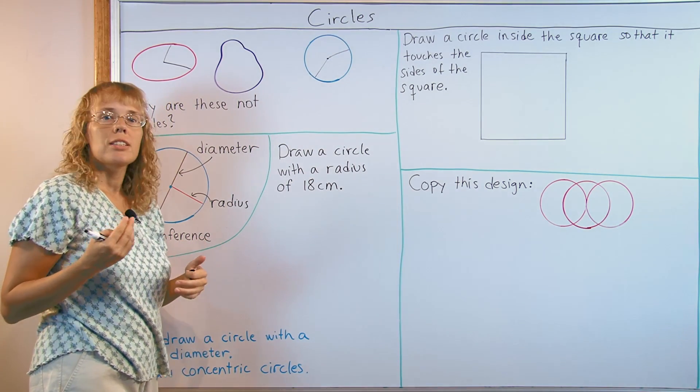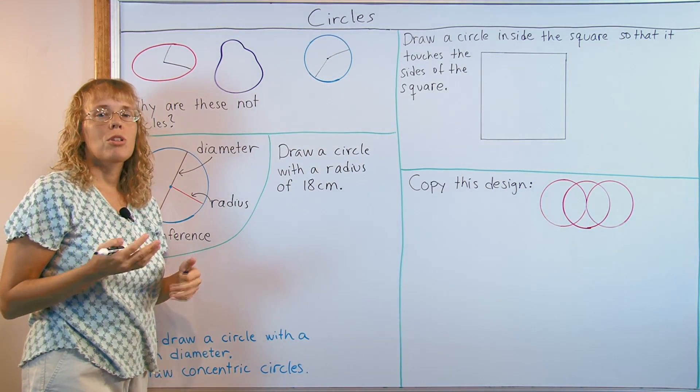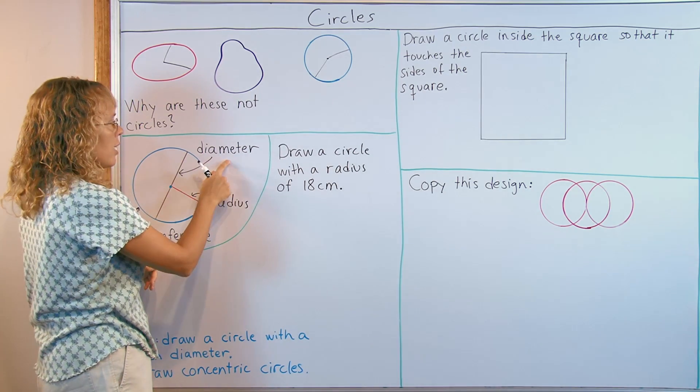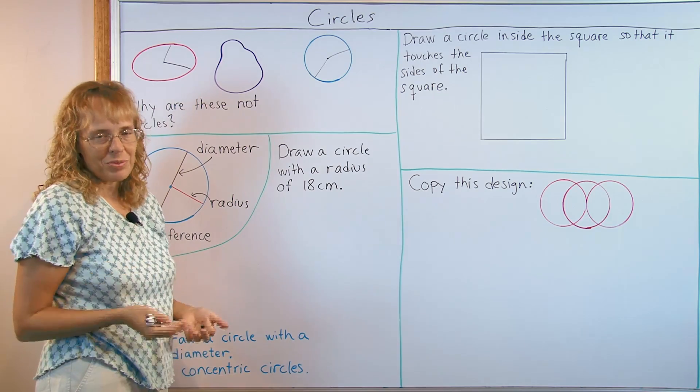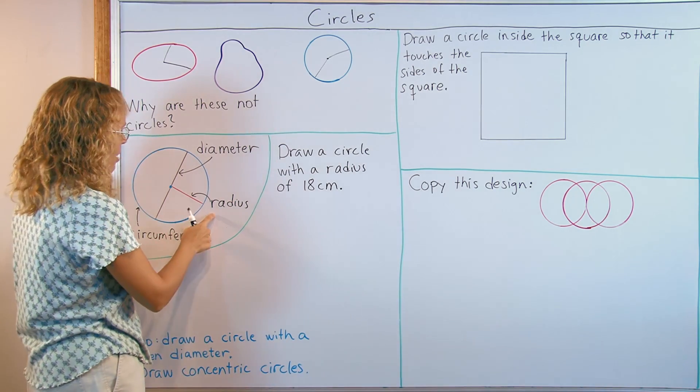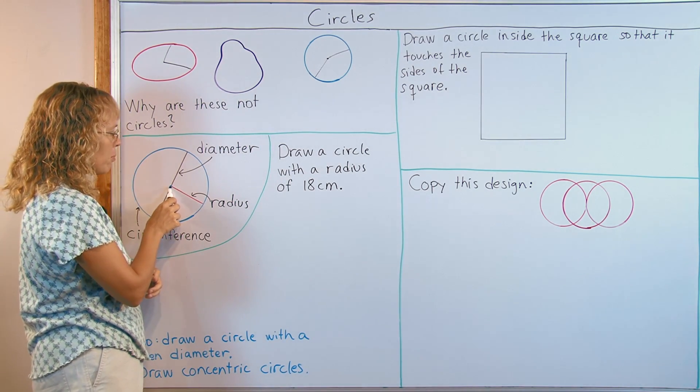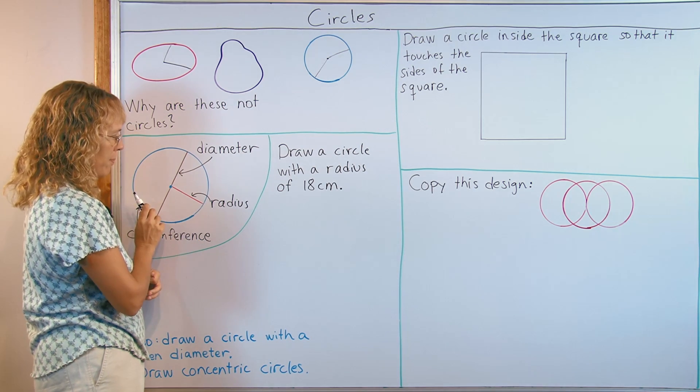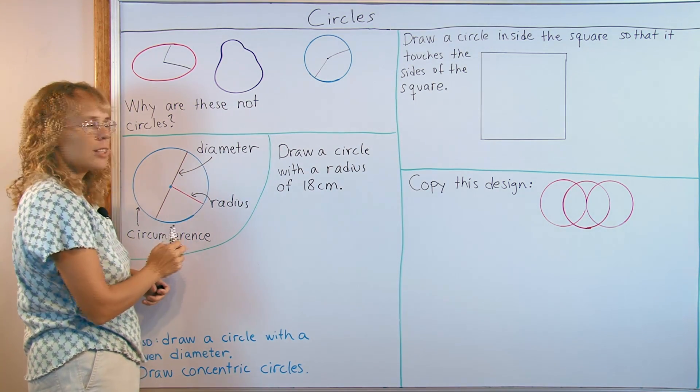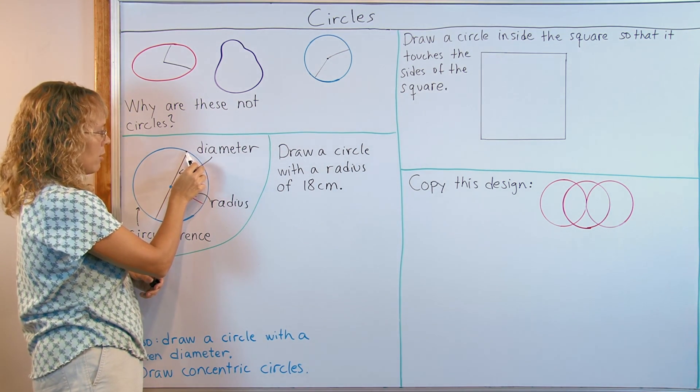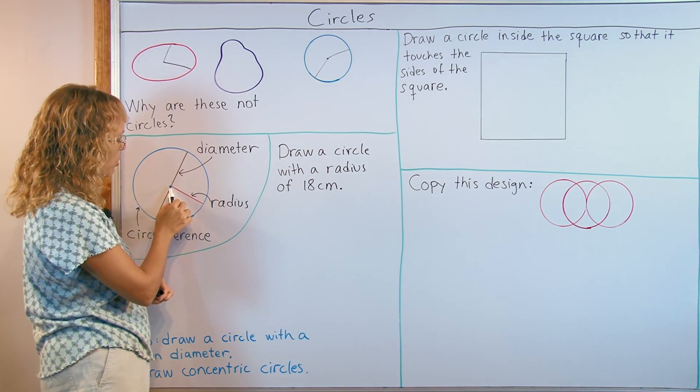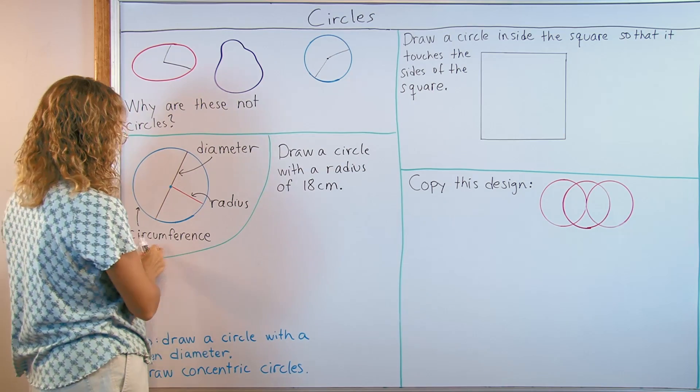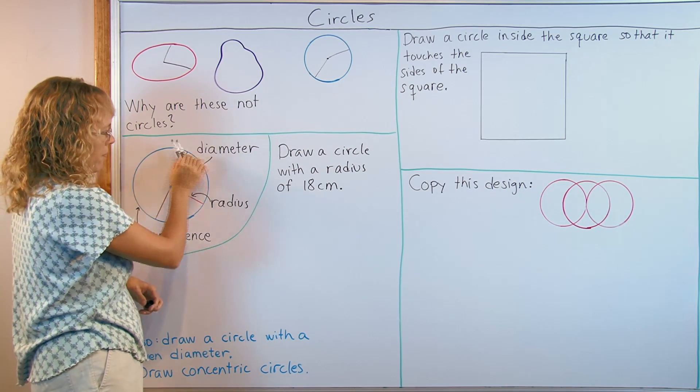There are three important terms to learn about circles. They are diameter, radius and circumference, and they are difficult for children to remember at first. Radius is the distance from the center point to the outer circle line. Diameter is the distance from the circle line or the circumference to the other side of the circumference, so that it goes through the center point. And then circumference is the actual circle line itself.